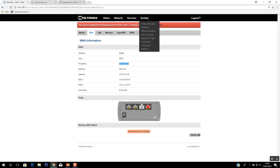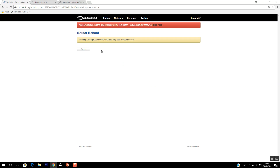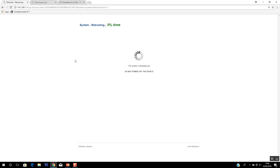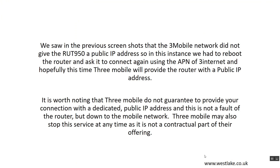So what we're going to do is reboot the router and hopefully when it reconnects, it will give us a public IP address and you'll be able to see the difference. We saw in the previous screenshots that whilst the router had connected, the IP address shown at showmyip.co.uk was different to the IP address showing on the router. This is a good example to highlight that it's not a guaranteed way of providing remote access to your router — it's not a contracted part of 3Mobile's offering, so you're not guaranteed it.